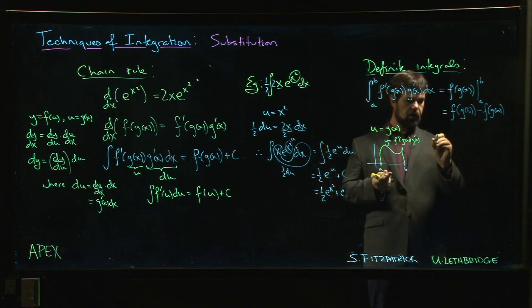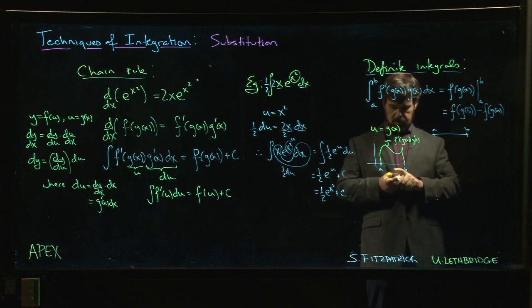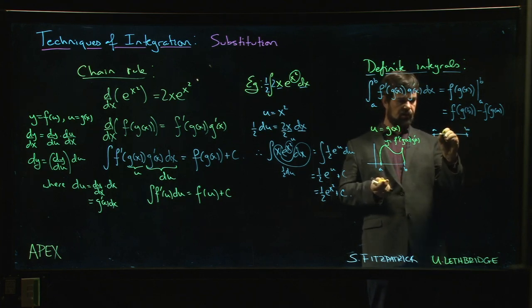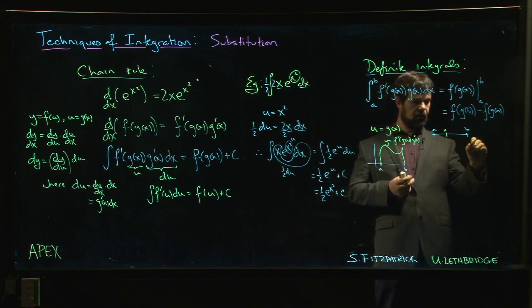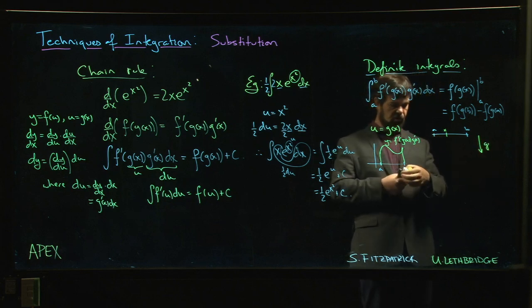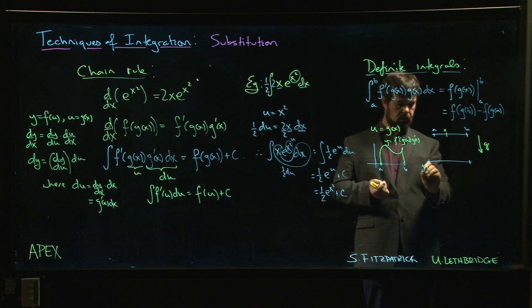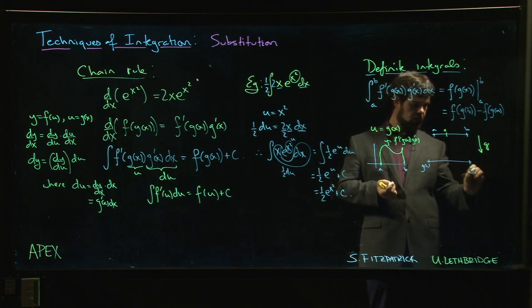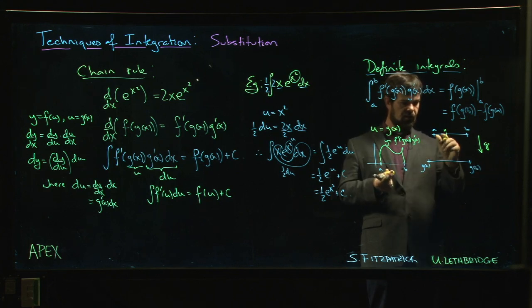So what happens when you make this u substitution? Well, here's one way to think about it: you're starting with this interval from a to b. All right, somewhere in here, let's say, is x, right? And now you're going to apply this function G, right, and so G is going to take you to some new interval.